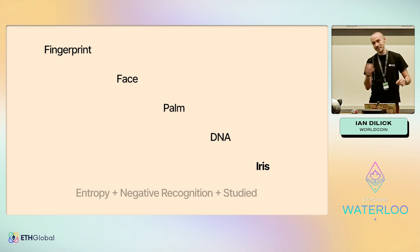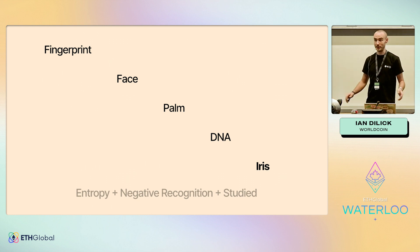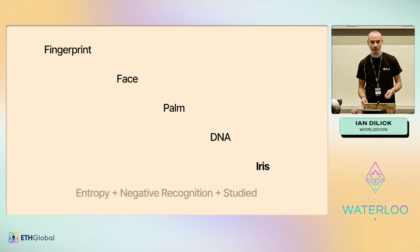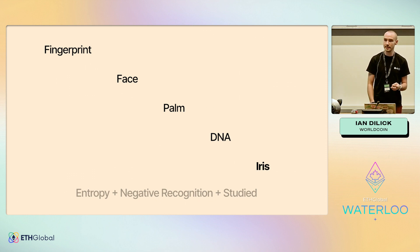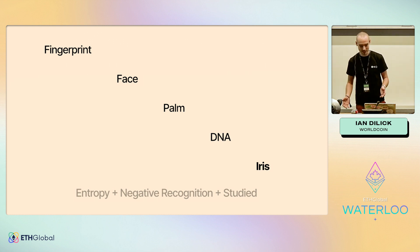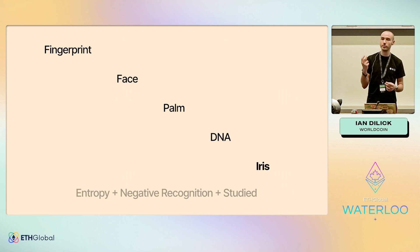At the other end of the spectrum with biometrics is DNA — lots of entropy, lots of data — but it breaks privacy. There's a lot you can know about a person just by having their DNA: you can tell their race, their sex, and those are things we don't want to know about our users. It's also generally really invasive, so that was thrown out as well.